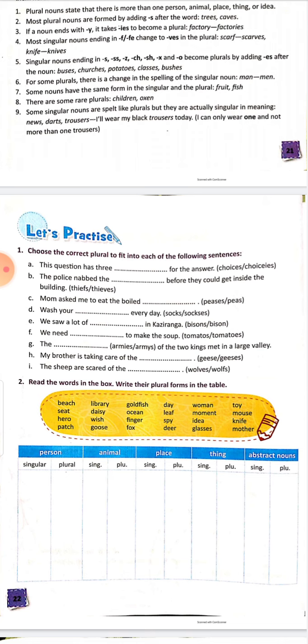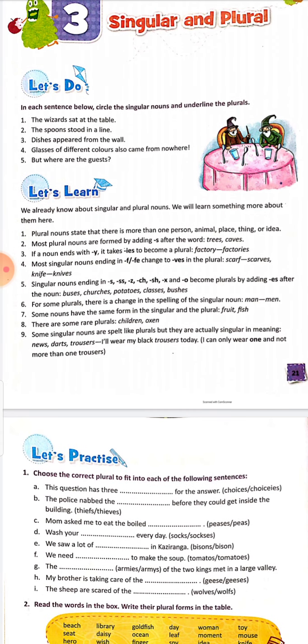Next: choose the correct plural to fit into each of the following sentences — I will not discuss this one, you have to do it by yourself. Number 2: from the given yellow box, you have to sort out person, animal, place, thing, and abstract noun — separate them, then make their plurals. Do by yourself. You are in class 5, so these things you have done already. Do it and we will get the answers in your next class. Read the chapter, read this portion — learn it properly. Till the next class, goodbye. Have a nice time.